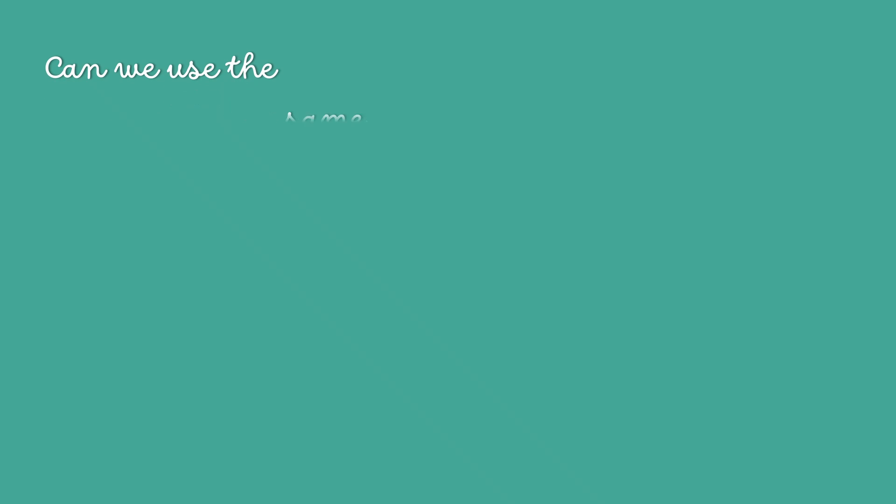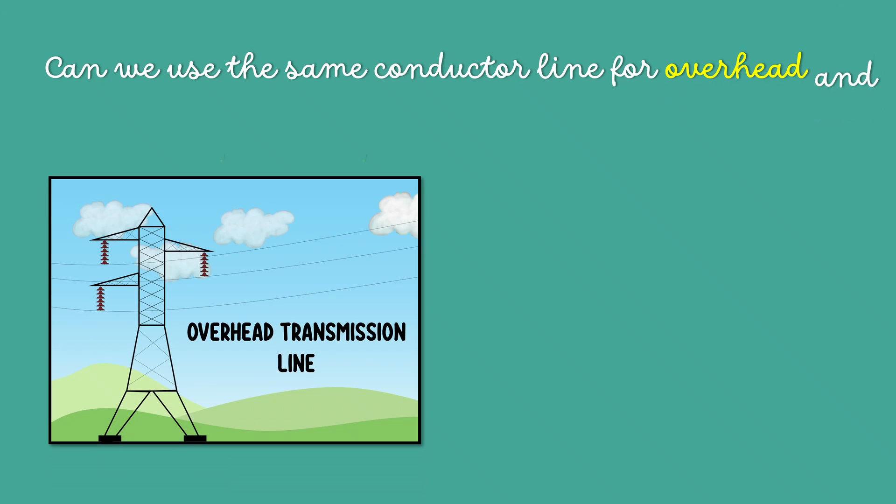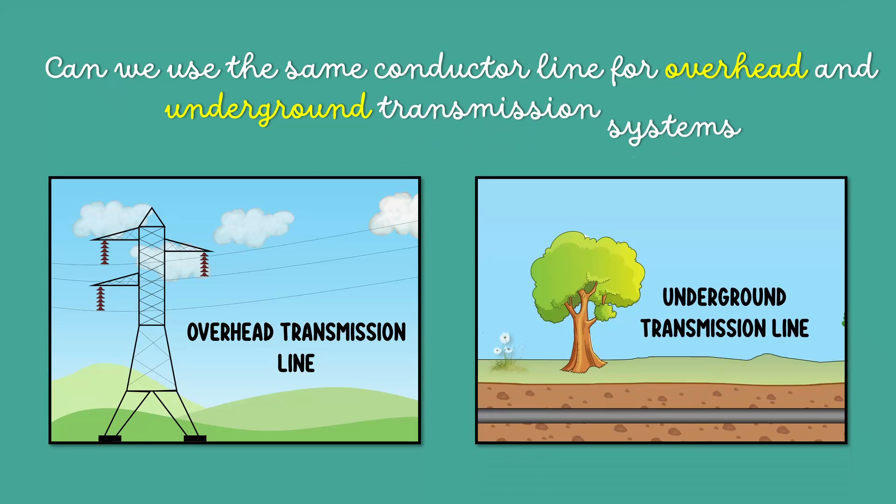Instead of discussing those advantages and disadvantages, I am going to answer an interesting question. We know that a transmission line is nothing but a conductor — can we use the same conductor line for both the overhead and underground transmission systems?